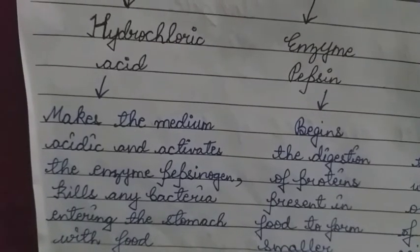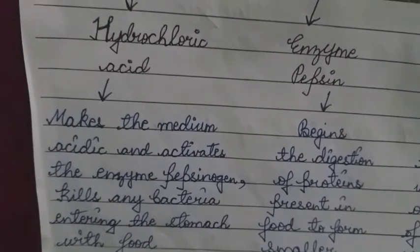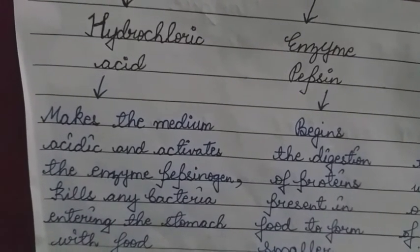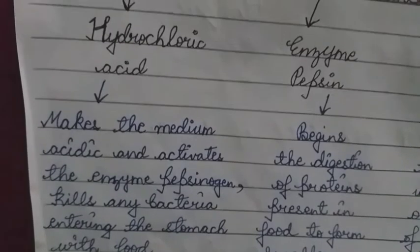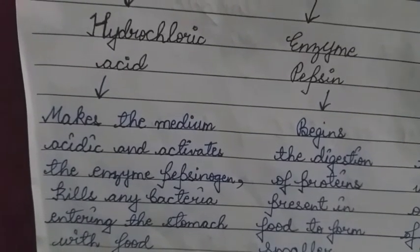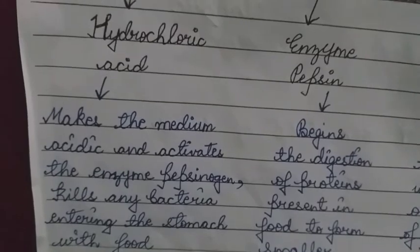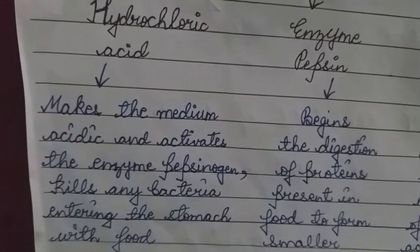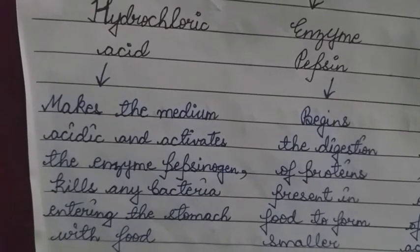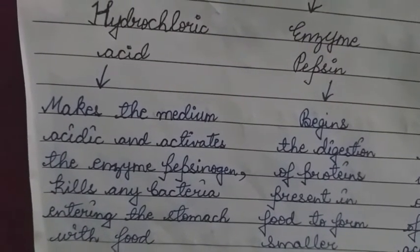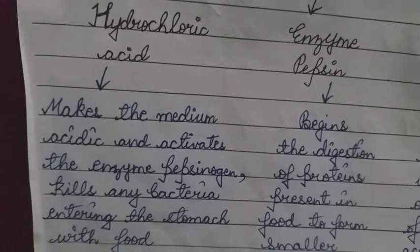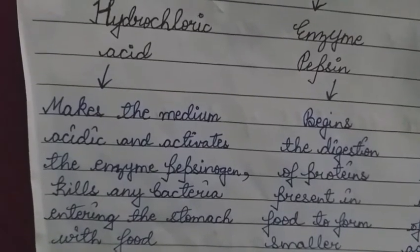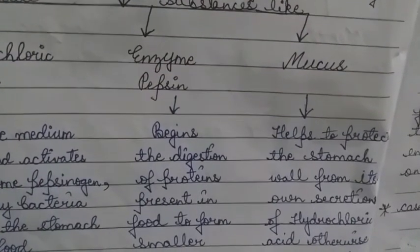Pepsinogen remains in its inactive form in the stomach until HCl activates it. The third function of HCl is that it kills or prevents any bacteria entering the stomach with food.